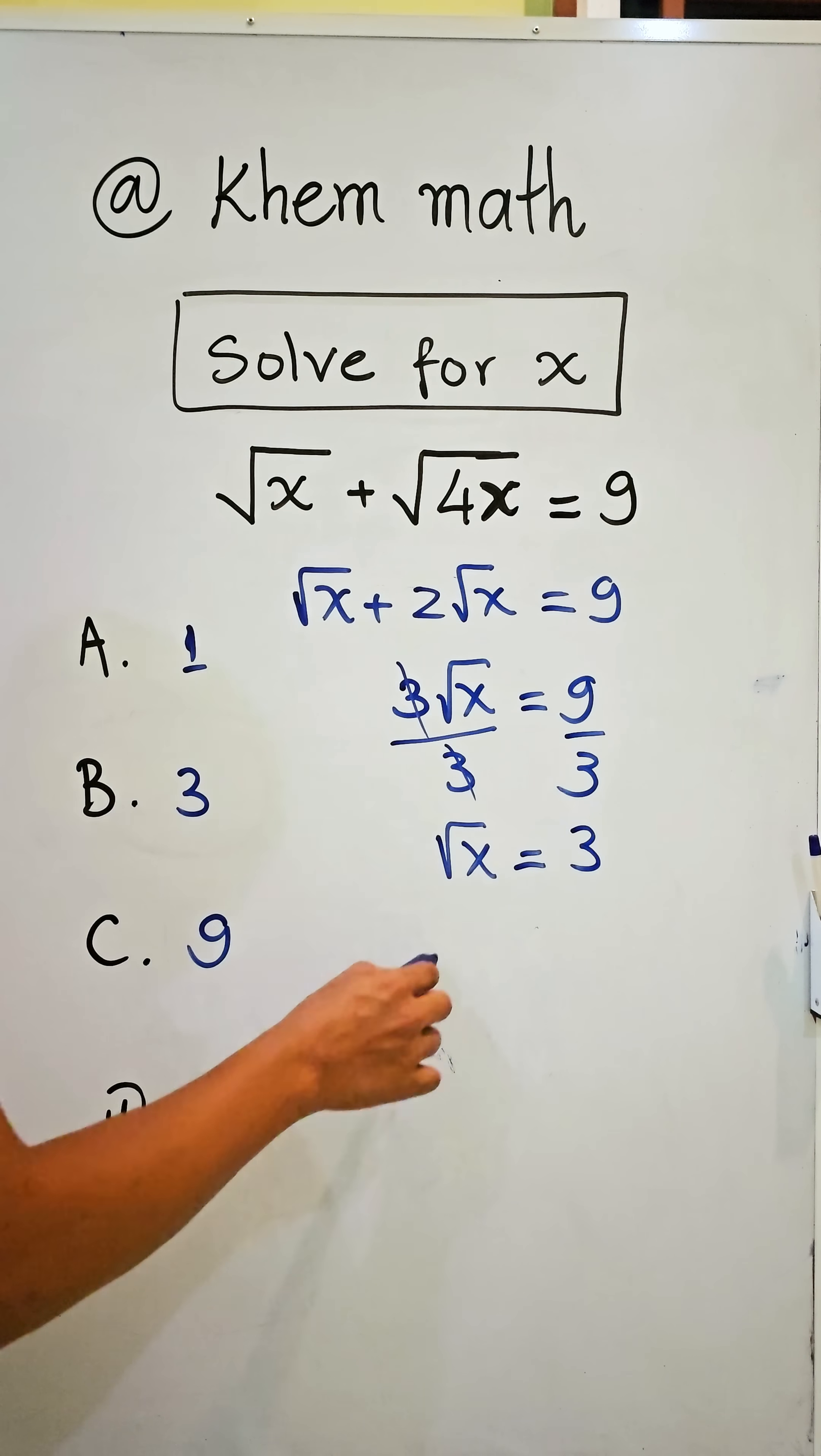And we square both sides of this equation, we get square root of x squared equals 3 squared. We simplify square root of x squared, we get x equals 9.